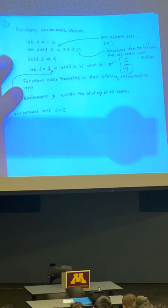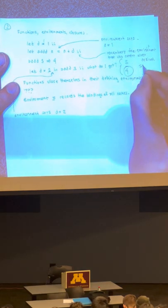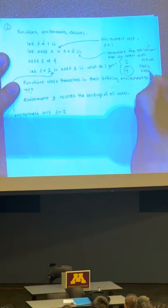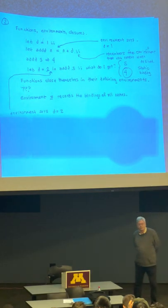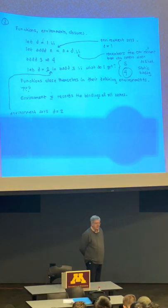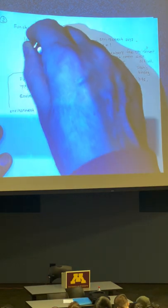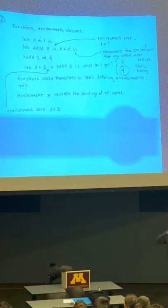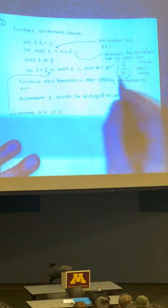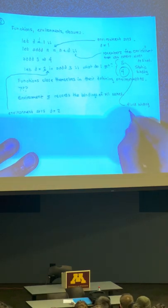There are names for both of these. This situation — where we remember the environment that was current when a function was defined — is called static binding. This is yet another use of the word 'static' in computer science. What it means here is that the value d has is determined statically just by looking at the code; you don't have to think about where the code is executed.